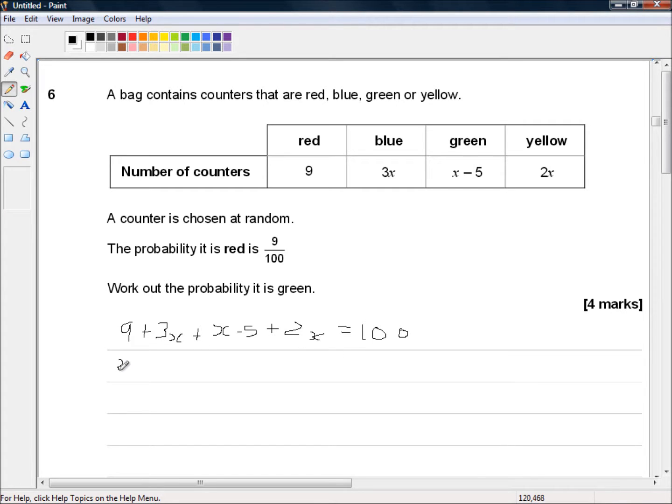So let's put the x terms on the left. 3x plus x plus 2x is equal to 100 minus 9 plus 5.